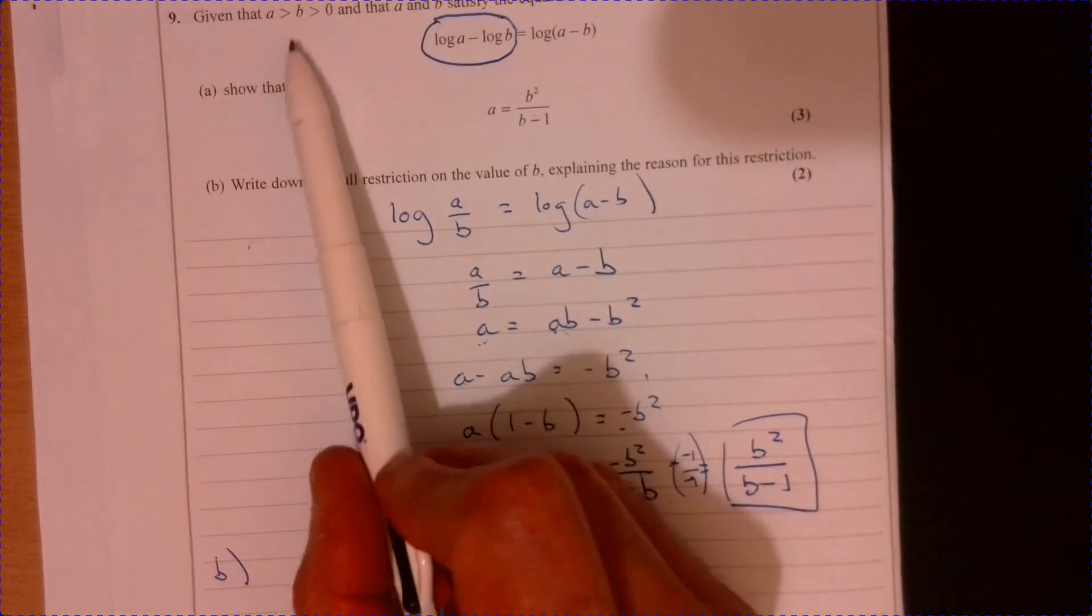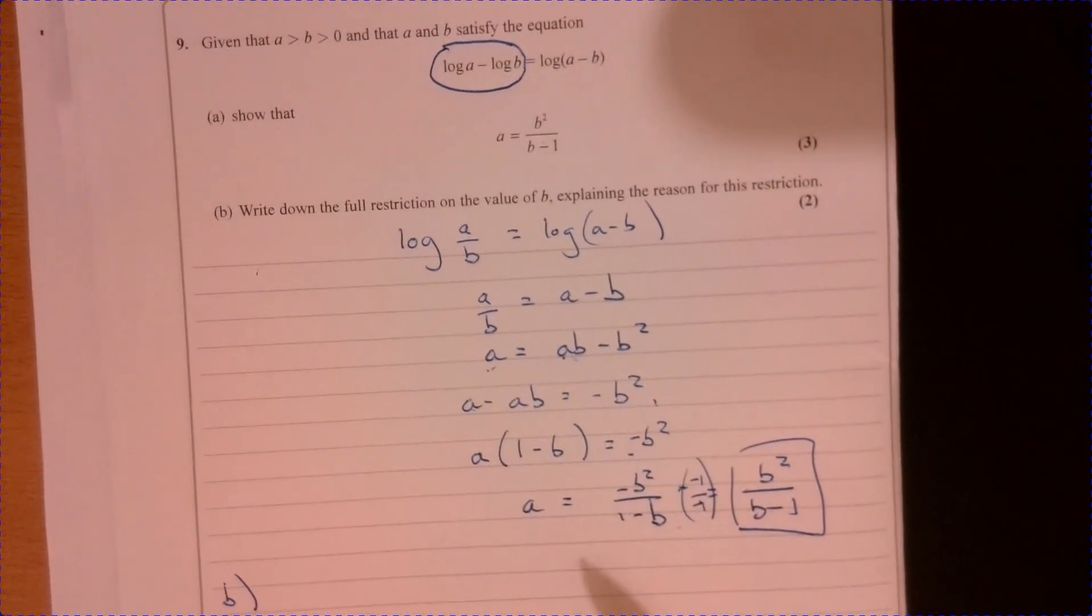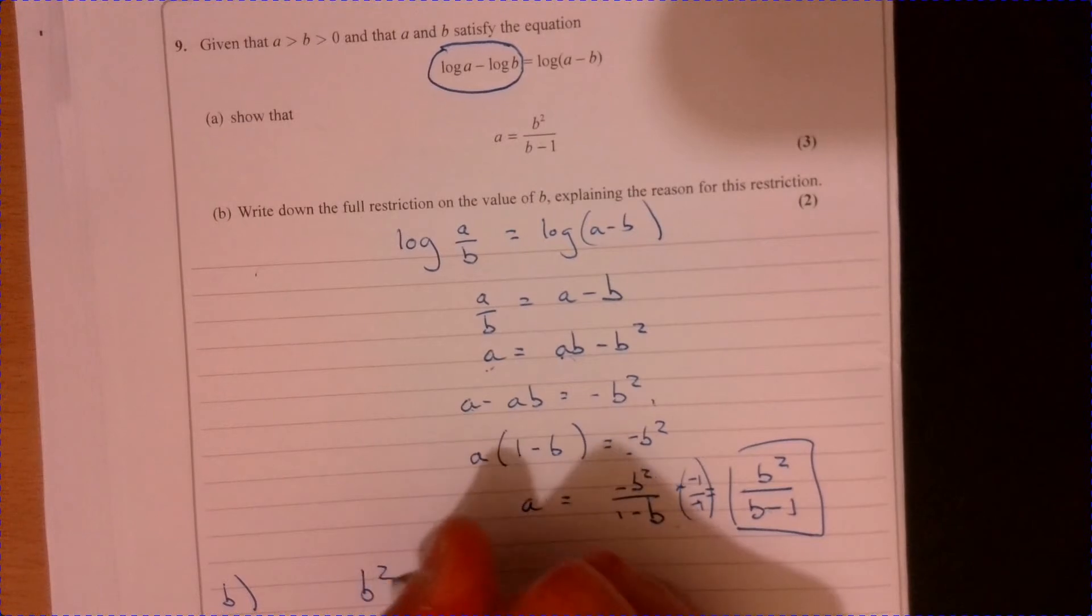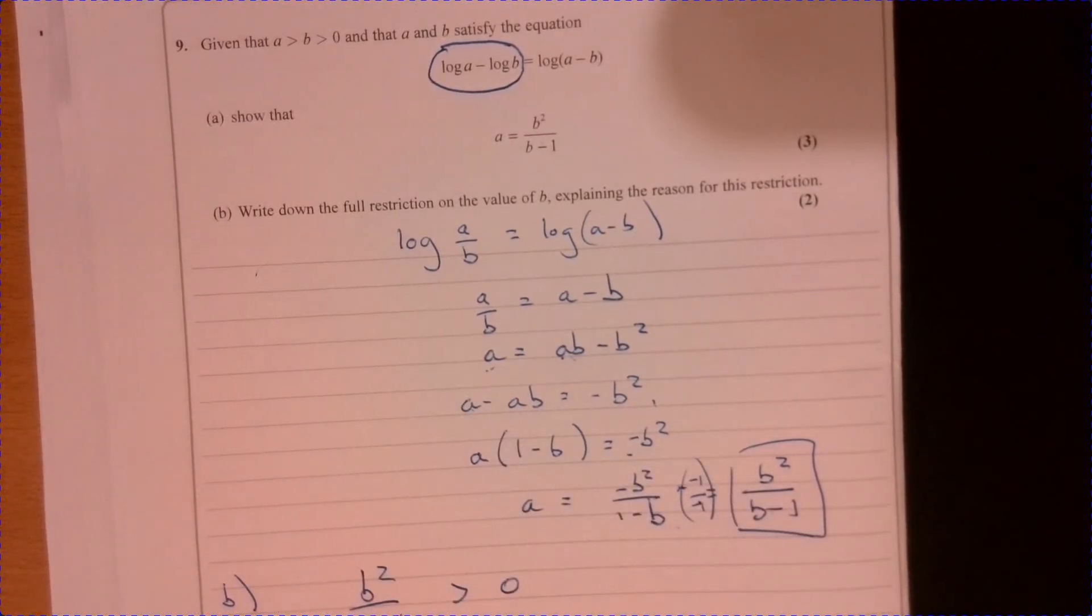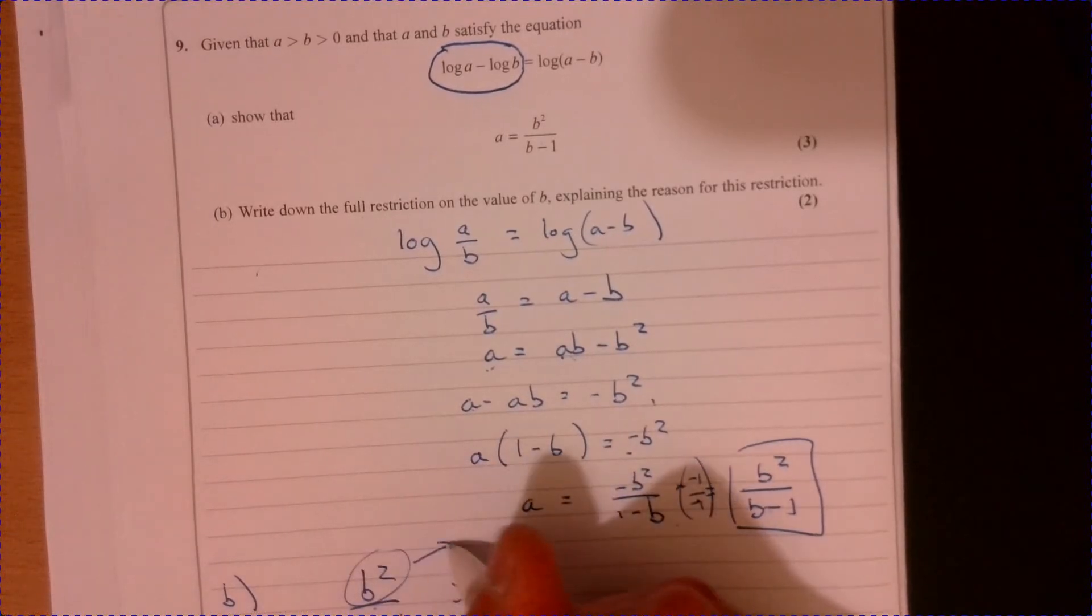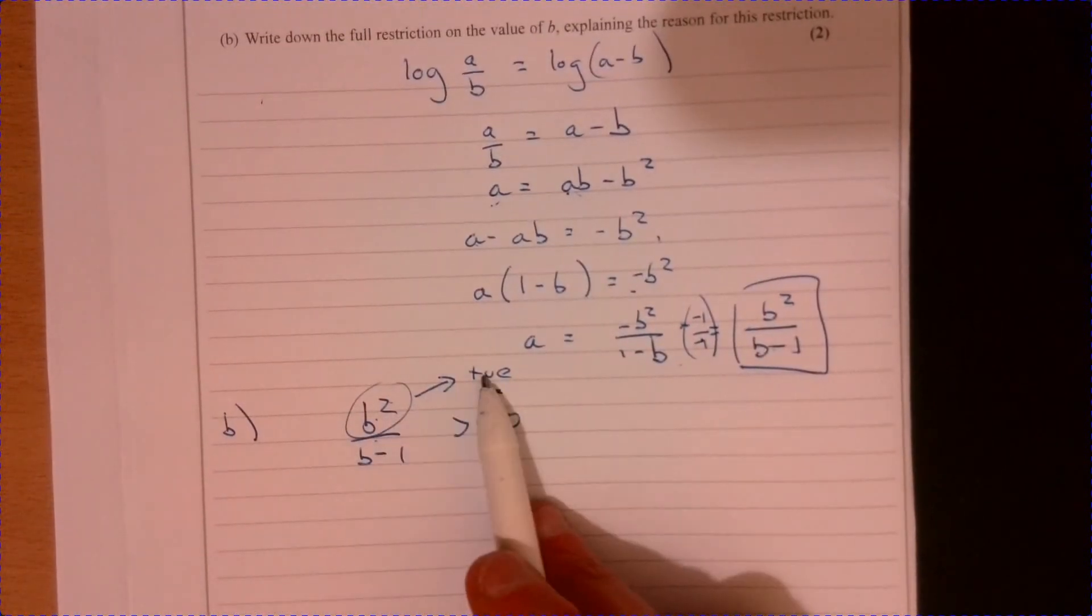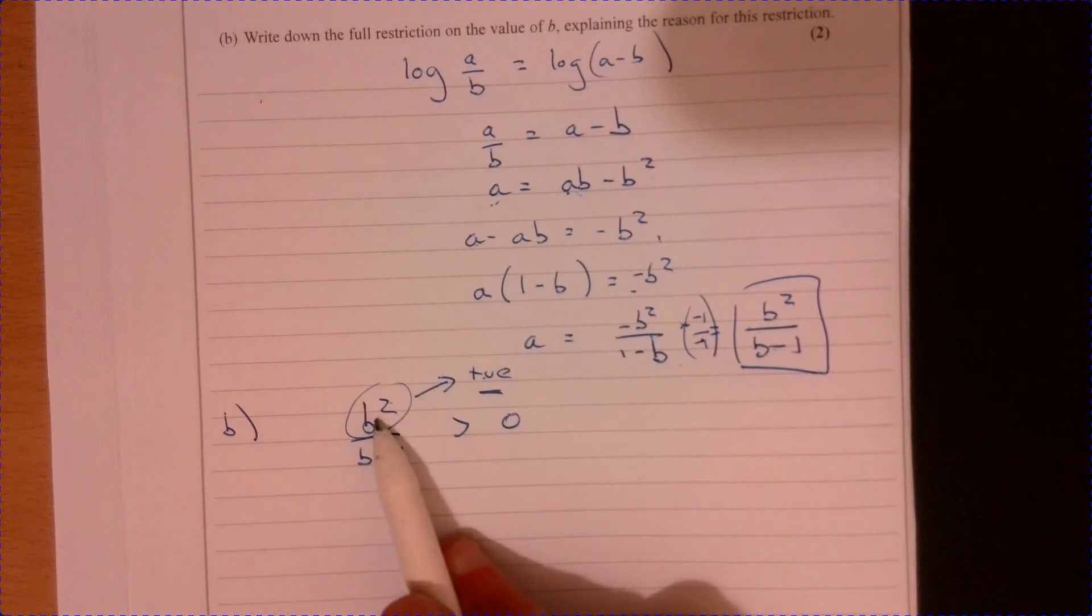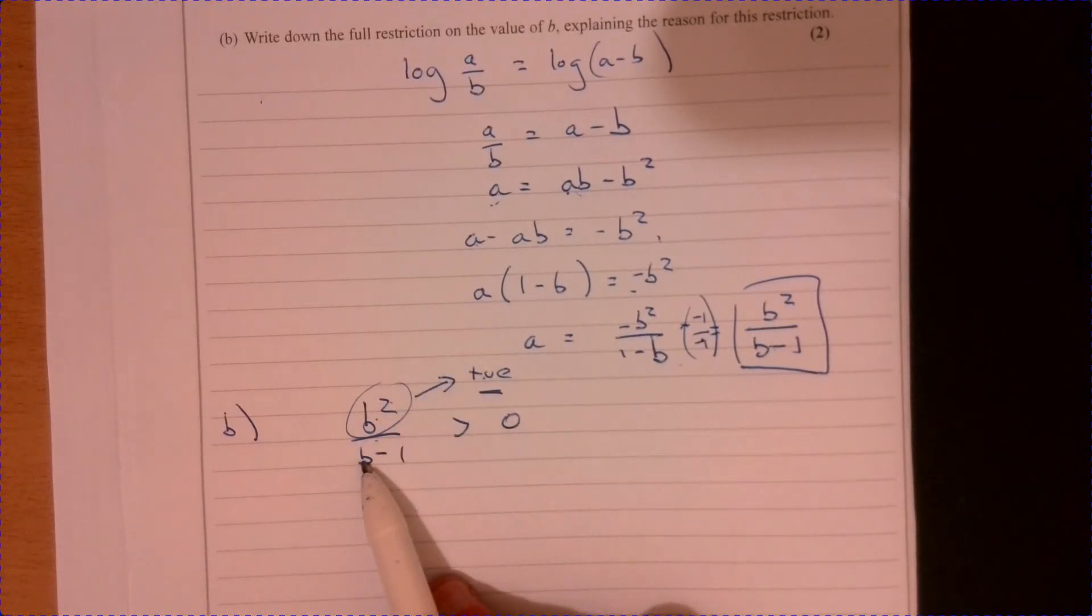we're told that A has to be more than B. That has to be more than 0. So this has to be more than 0. So we know B squared minus B. That's all got to be more than 0. Well, B squared, that's going to be, that's always going to be positive. It's always going to be positive.